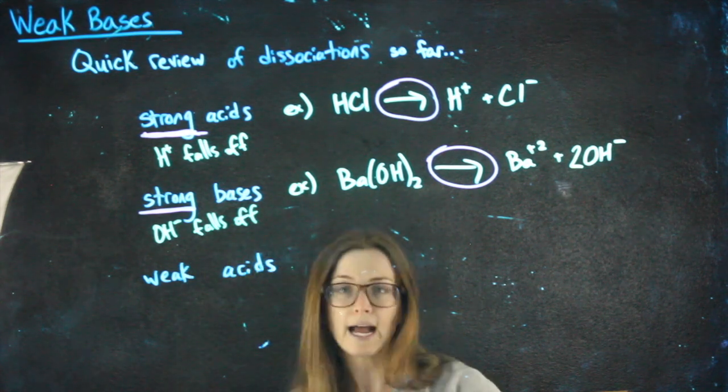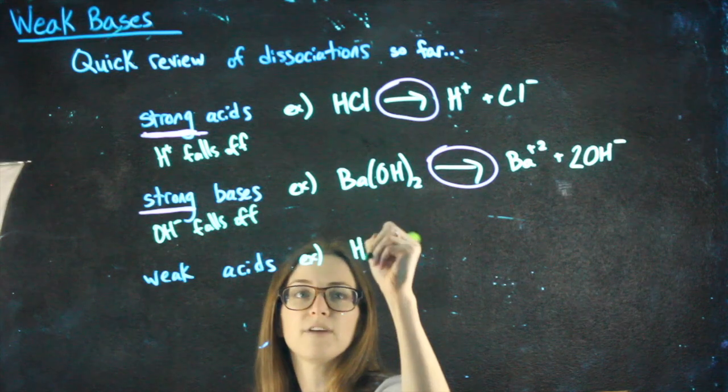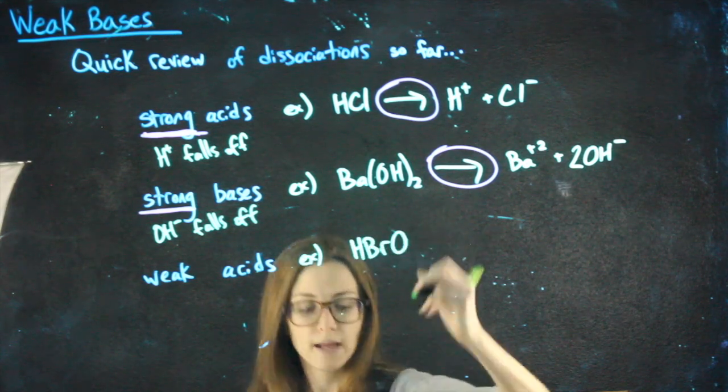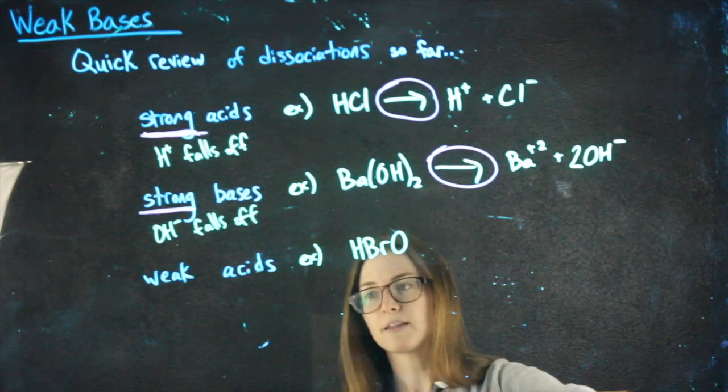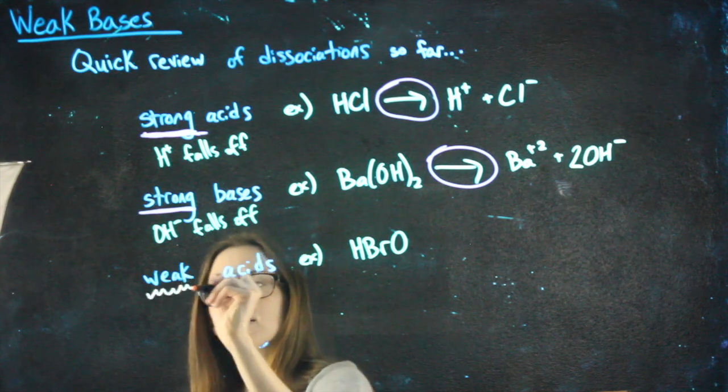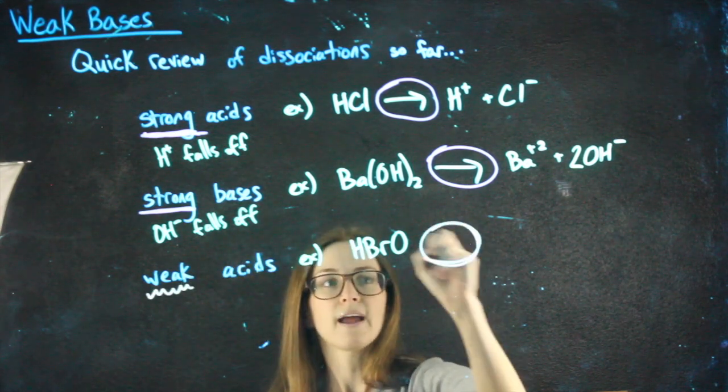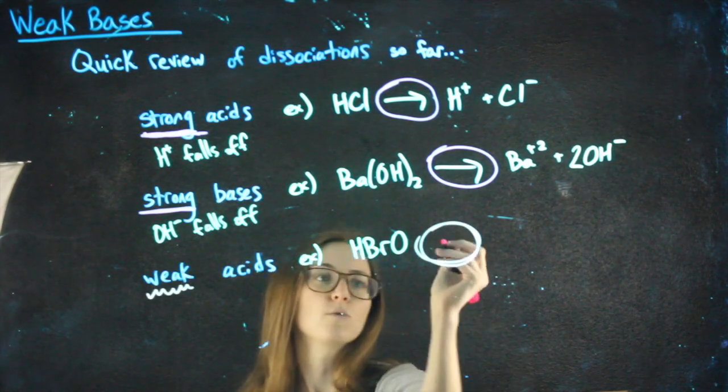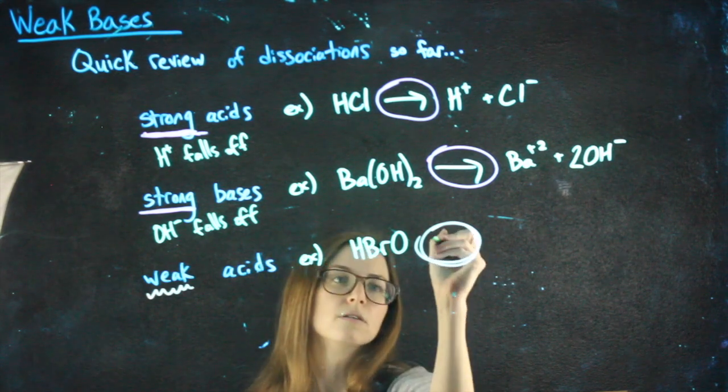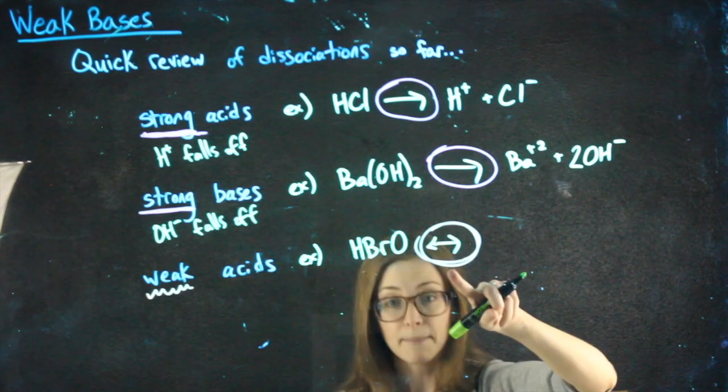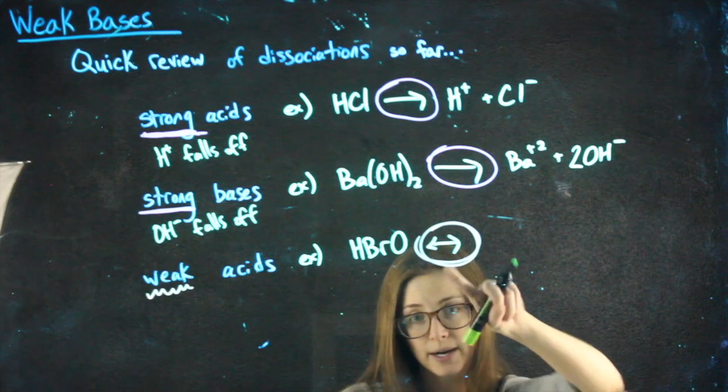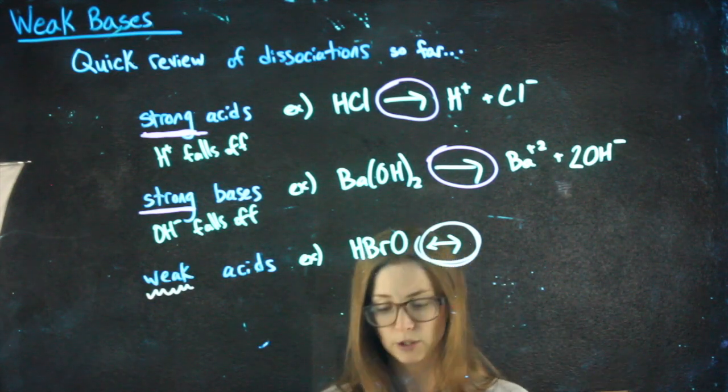So in weak acids, I'll use an example of HBrO. As soon as it is something that is weak, we know that our arrows have to be equilibrium arrows. That matters, because any time we're using equilibrium arrows, we're going to need an ICE chart for any of the math we do.